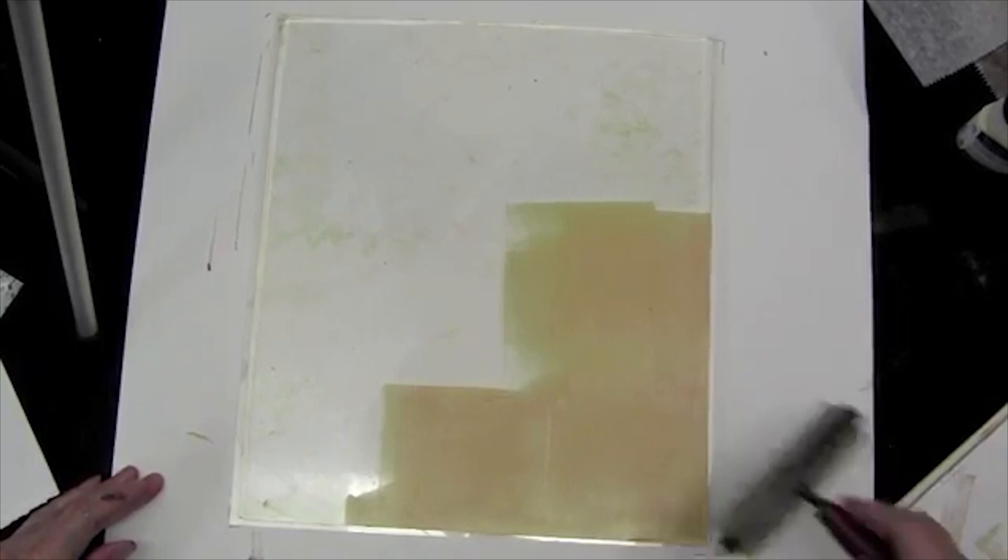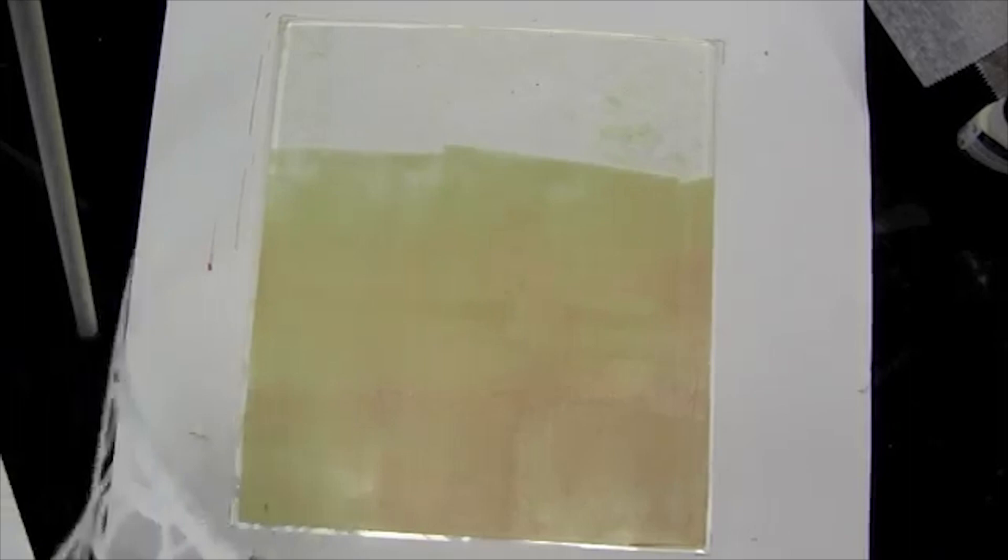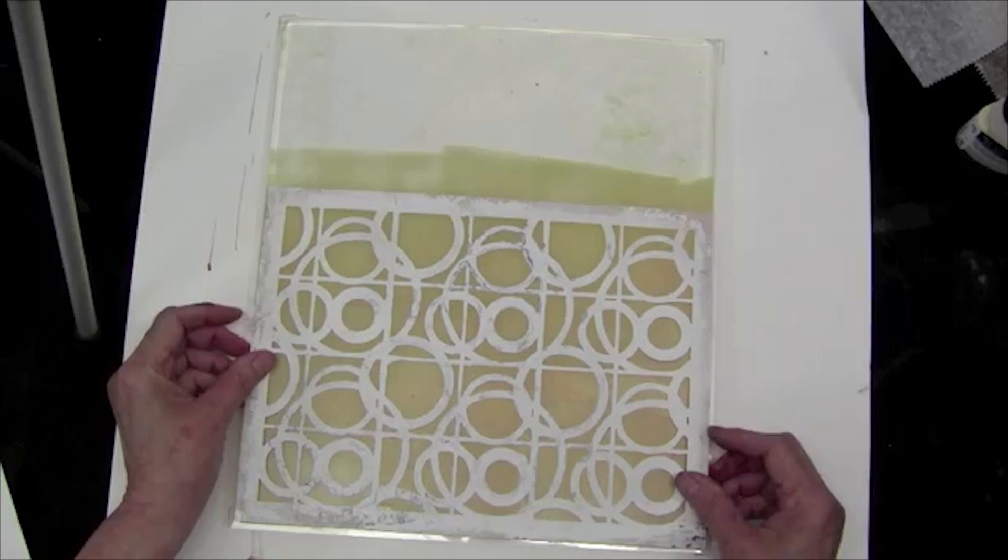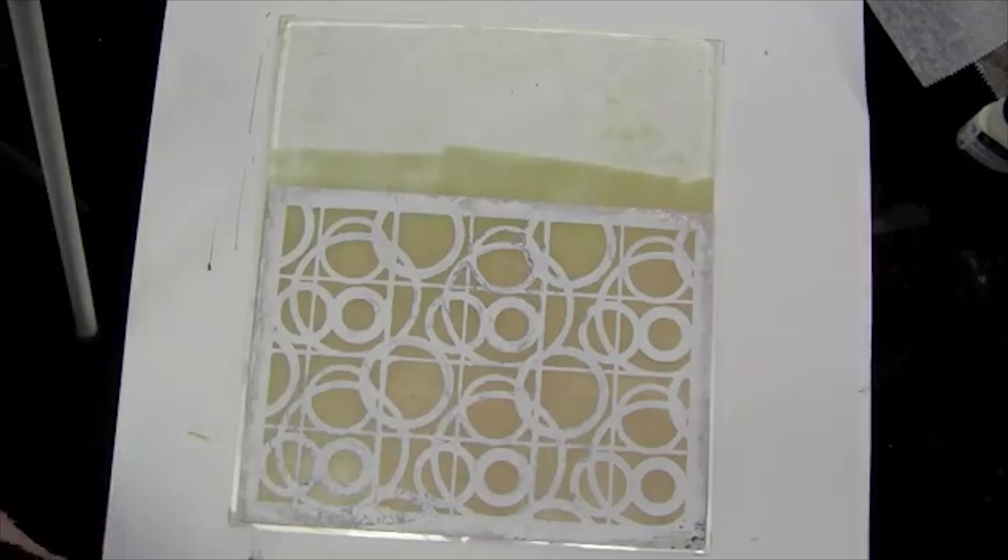Not too much. Mix that again. We're going to brayer the bottom of the plate. I've got my lighter color, I'm going to put my stencil on there. It's great that this plate is 12 inches and the stencils are 12 inches. I'm going to take my rag again and feather that edge.